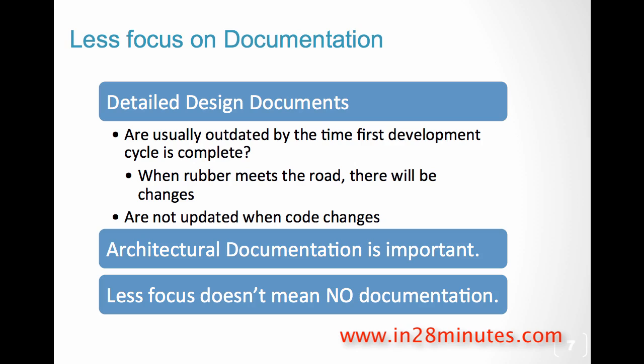Less focus on documentation. A 200-page document describing design gets outdated very soon — nobody has time to update it, and under pressure, documentation is the first thing lost. A better approach is to have something like Confluence or a wiki where you keep your design documented. It doesn't have to be a formal PPT or diagram — it can be a hand drawing. As long as it shows what the system is, the important parts, and how they connect, it's good enough.